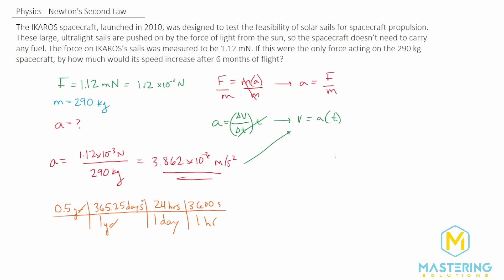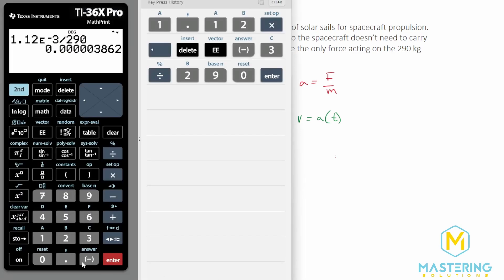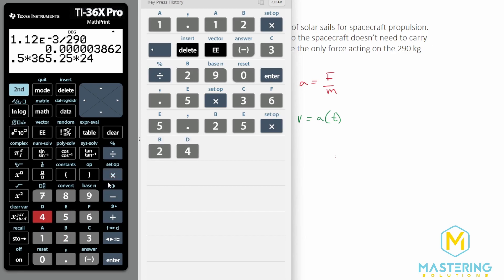So now the years cancel, the days cancel, and then the hours cancel, and we're left with the units that we want on top. So we have 0.5 times 365.25 days, then we'll multiply that by 24 to put us in hours, and finally by 3,600 to put us into seconds.